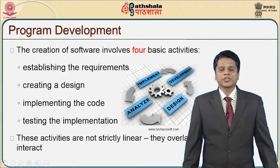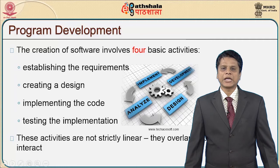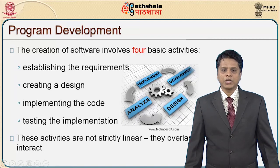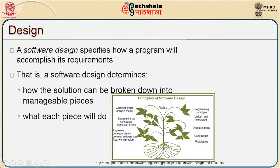When studying the software development life cycle, the creation of software involves four basic steps: establishing the requirements (the analysis phase), creating a design (design phase), implementing the code (development phase), and testing the implementation (testing phase). These activities are not strictly linear — they can overlap or interact with each other. Now that we are in the design phase, we will talk about how. A software design specifies how a program will accomplish its requirements.